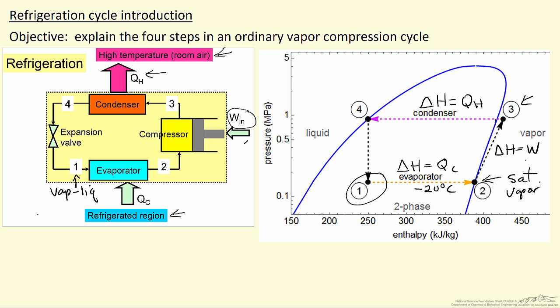This high pressure liquid then, we expand through a throttle, an expansion valve, and the energy balance for this step is that delta H is equal to 0. Assume it's adiabatic because it's rapid. There's no work being done, but when we lower the pressure of a saturated liquid, the liquid evaporates. Because it's adiabatic, the energy to evaporate it comes from cooling everything down. This is how we get the low temperature that we need to accomplish our refrigeration.